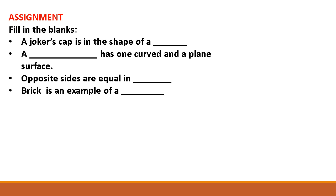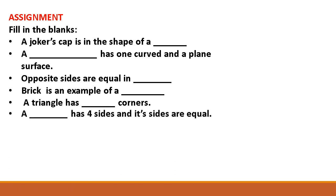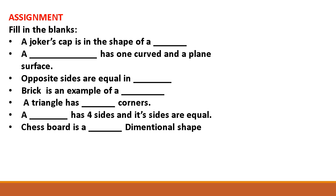Is it 2D or 3D? A 2D shape has two dimensions and a 3D shape has three dimensions. A triangle has three corners. A square has 4 sides and all its sides are equal. A ball is a three-dimensional shape.